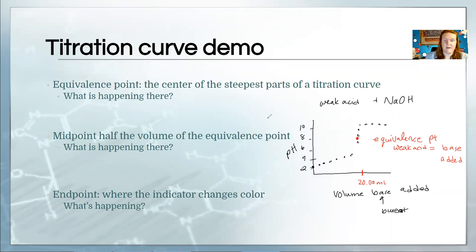Let's just pretend like that volume is 20 milliliters for this titration. The midpoint is halfway along that process. So our midpoint would be at 10 milliliters. So that'd be right here.